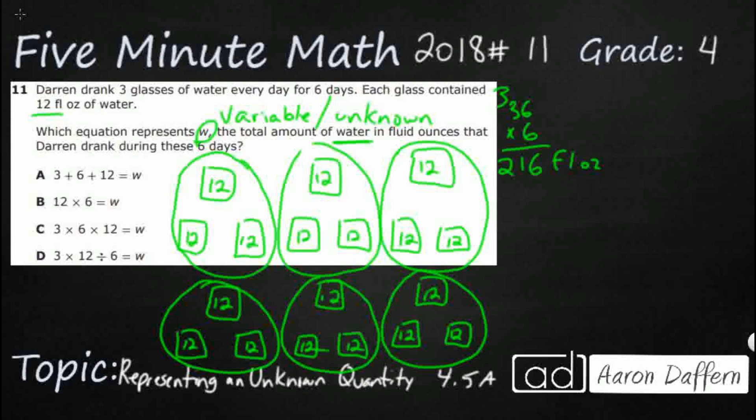But remember, we're not necessarily looking for this. This is what our W is going to equal. We're looking for an equation that can help us get there. So obviously, A is not going to get us anywhere close. They simply added, there's no multiplication, we ended up multiplying quite a few times here. 3 plus 6 plus 12,